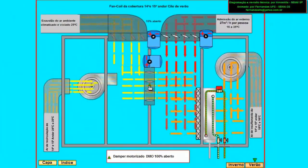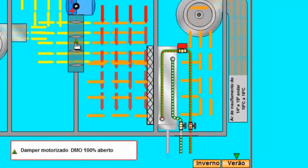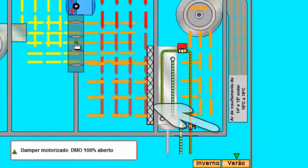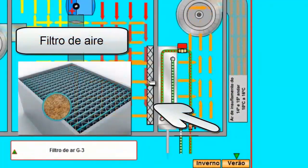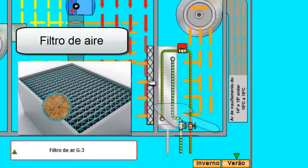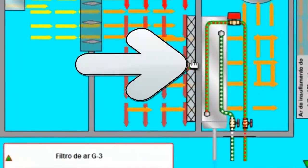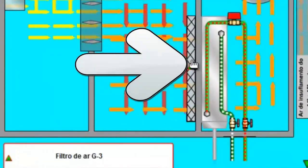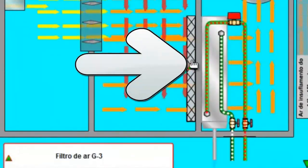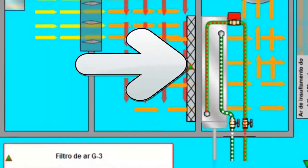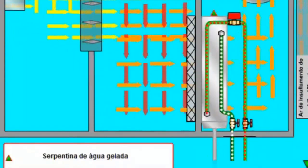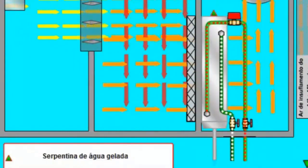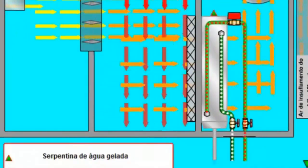To remove impurities from the air that is going to be supplied to the premises, the air handling unit and fan coil have filters. In this case we have a G3 filter. Coarse dust filters are mainly used in turbomachinery air intake systems, ventilation and air conditioning systems, laboratories, chemical and pharmaceutical plants, as well as hoods for vapor removal in workplaces.